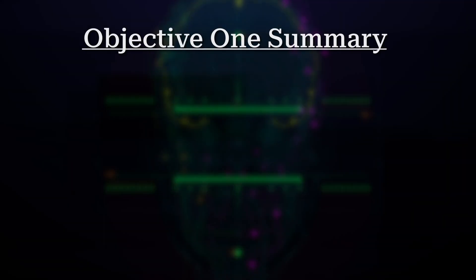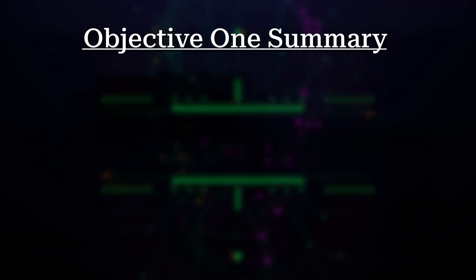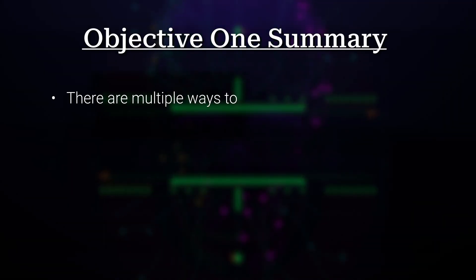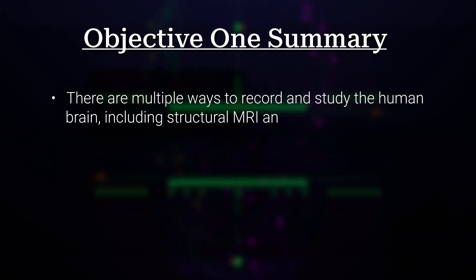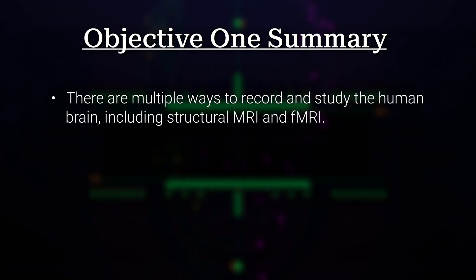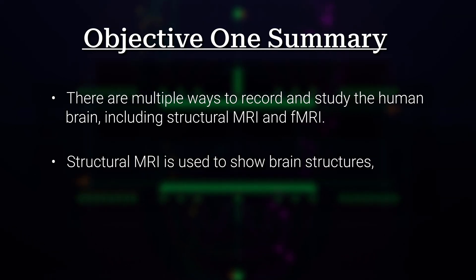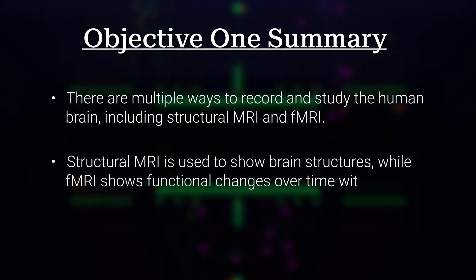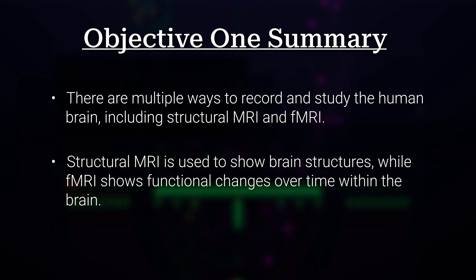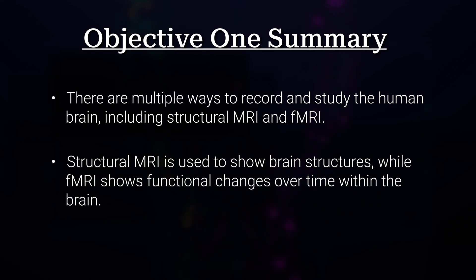In this section, we learned that there are multiple ways to record and study the human brain, including MRI and fMRI. Structural MRI is used to show brain structures, while fMRI shows functional changes over time within the brain. Modern technology allows for capturing brain activity in a three-dimensional space.